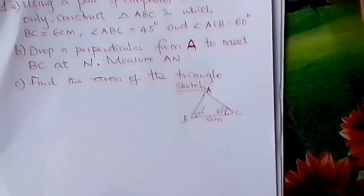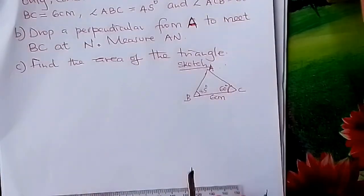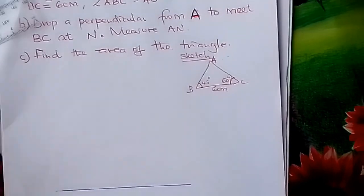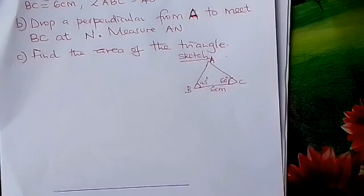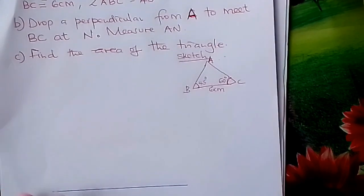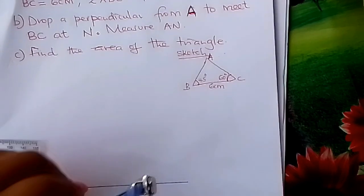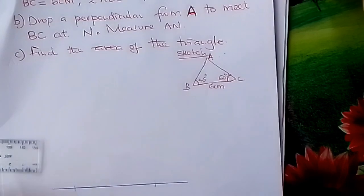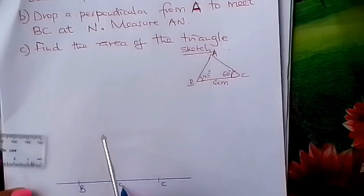Come and draw a line to start with the base. Measure 6 centimeters accurately from your ruler. Pick your 6 centimeters, make a mark there, and fix it. Label this end as B and this end as C, and write 6 centimeters.